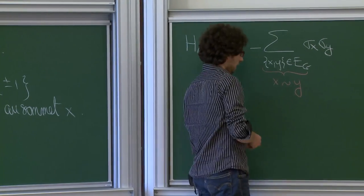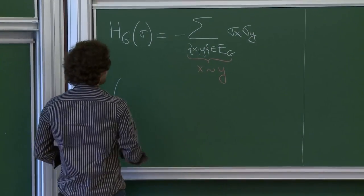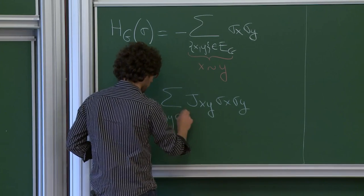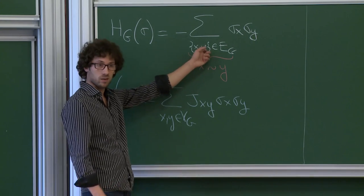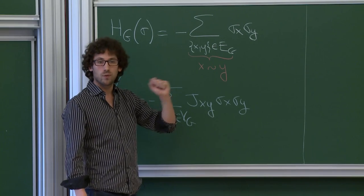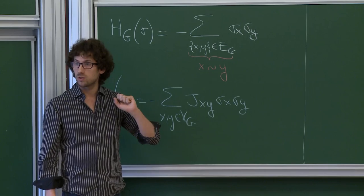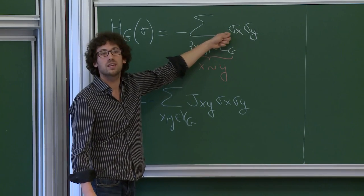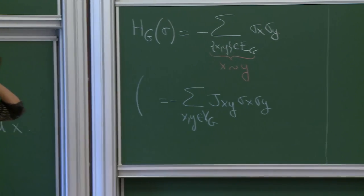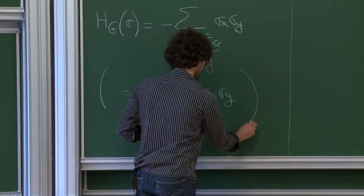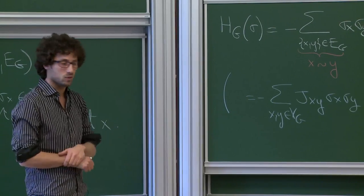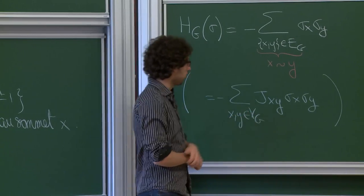En général, on écrit l'énergie comme moins la somme de J(x,y)·σ_x·σ_y pour tous x, y dans V_G, où J(x,y) est la constante de couplage entre x et y. En prenant le modèle nearest-neighbor ferromagnétique, on pose J(x,y) = 1 si voisins, 0 sinon. Beaucoup de résultats que je présenterai se généralisent à des modèles à longue portée, mais on n'aura pas le temps d'y aller.